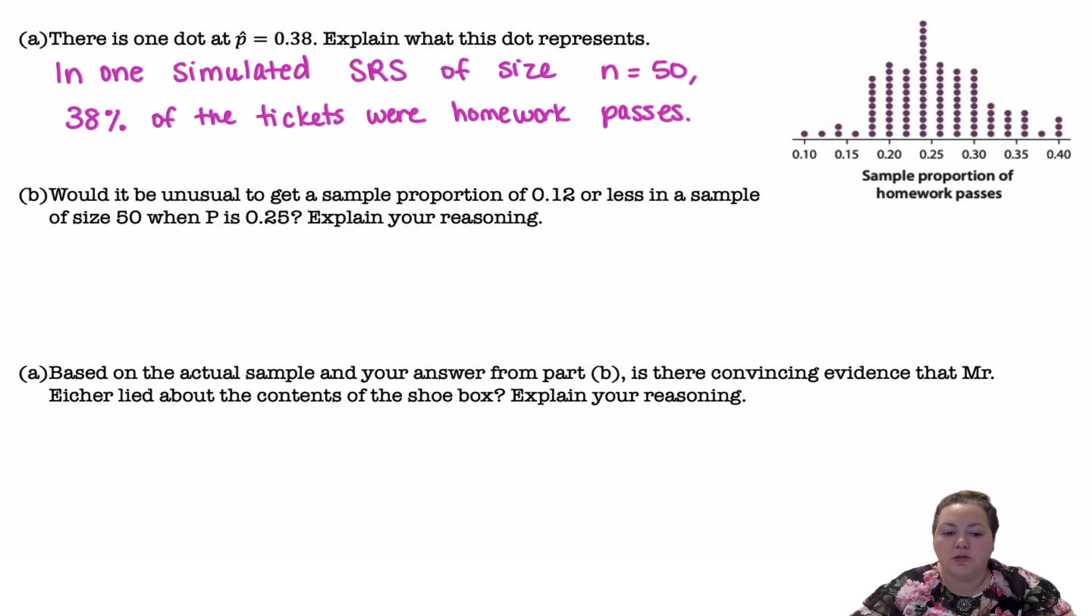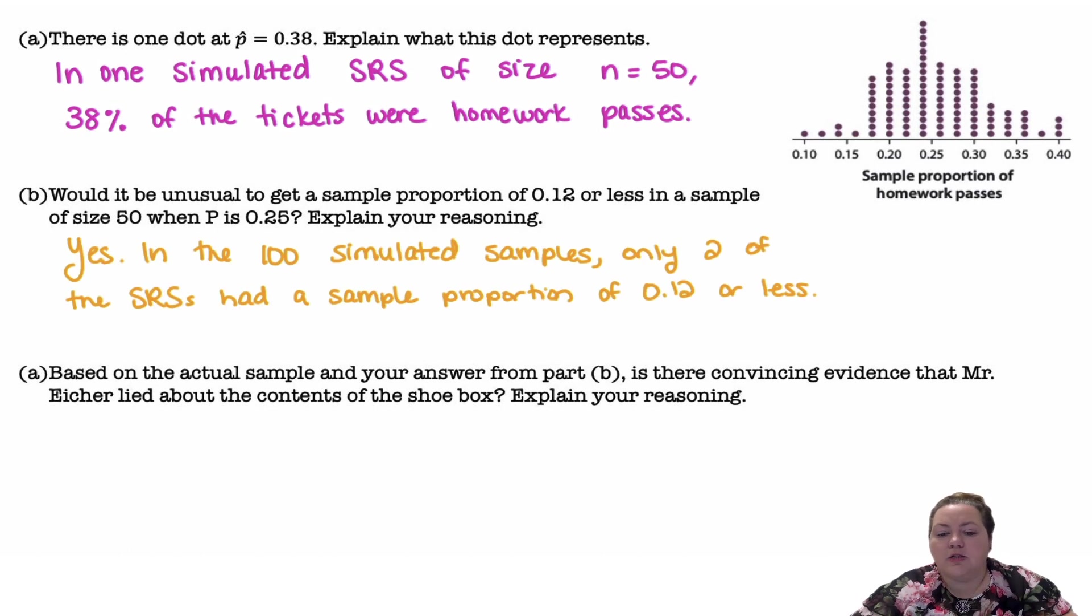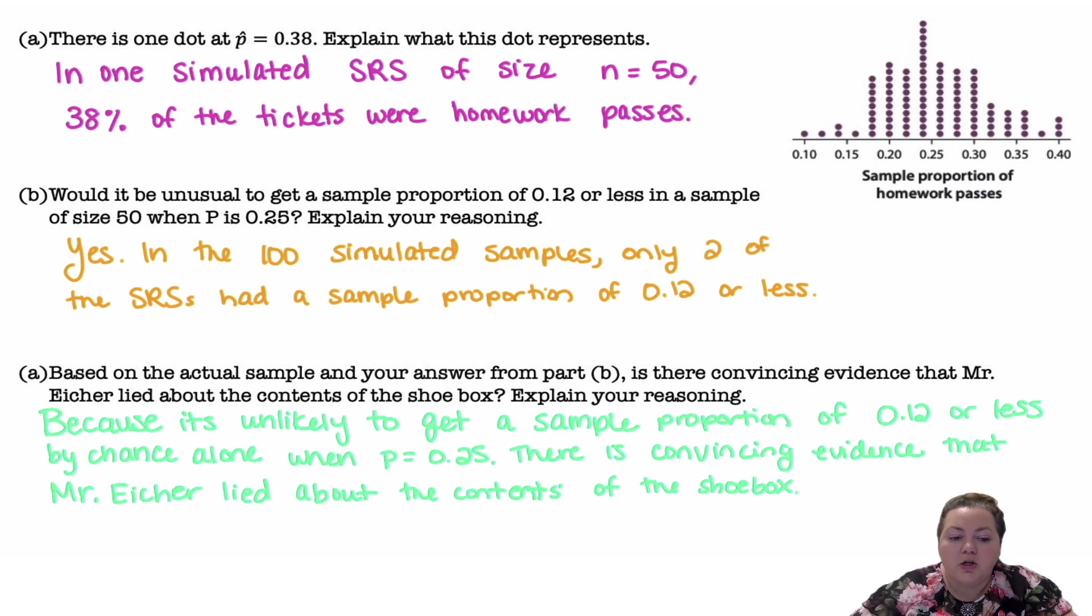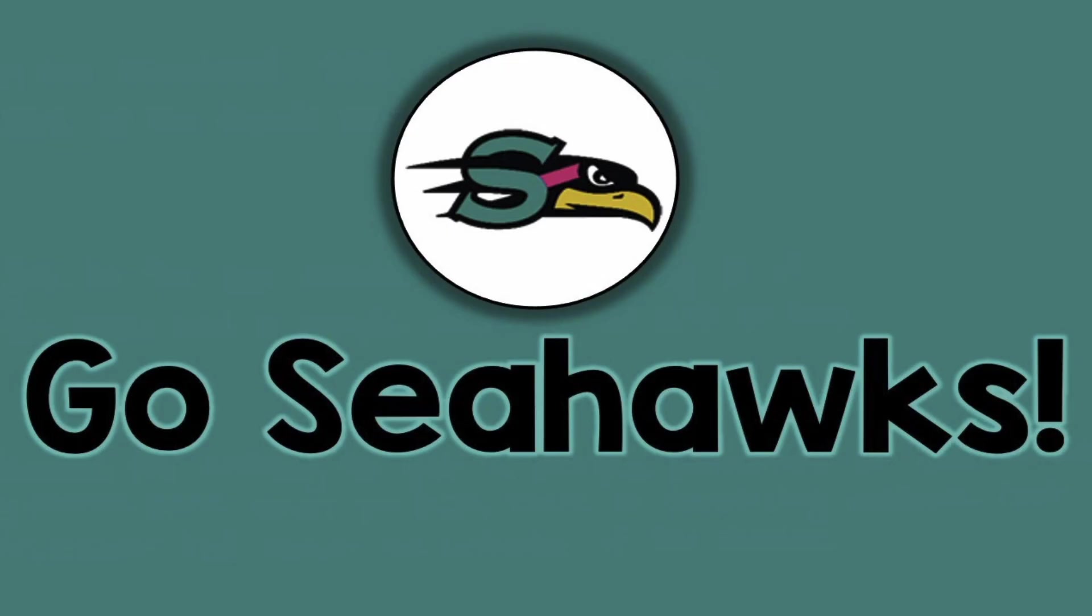Would it be unusual to get a sample proportion of 0.12 or less in a sample of size 50 where p = 0.25? Well, yes, in the 100 simulated samples, only two of the simple random samples had a sample proportion of 0.12 or less. And based on the actual sample and your answer from part B, is there convincing evidence that Mr. Escher lied about the contents of the shoebox? Alright, go Seahawks.